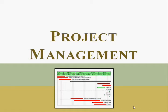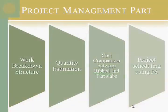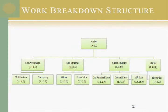The last part of our graduation project is the project management and scheduling. We have four divisions: the work breakdown structure, quantity estimation, cost comparison between the ribbed slab and flat slab, and project scheduling using Primavera P6. For the WBS, the project is divided into site preparation work, substructure, and the marina. Site preparation includes mobilization and surveying; substructure includes piles, foundation work, car parking floors, and ground floors up to level 22.